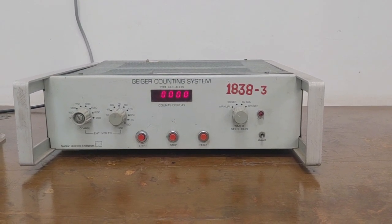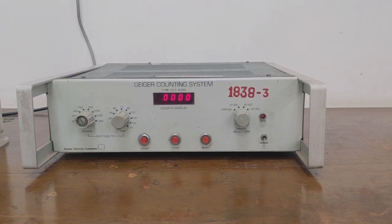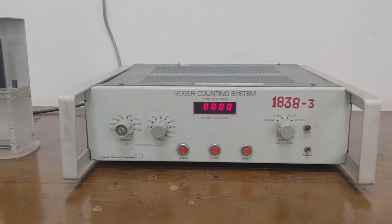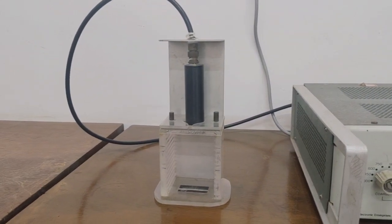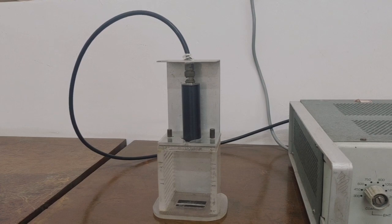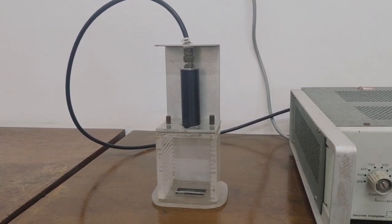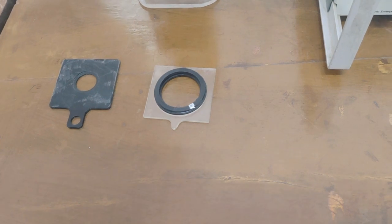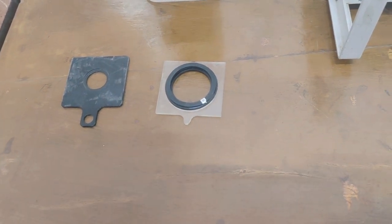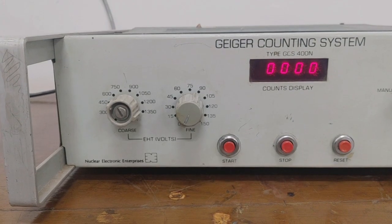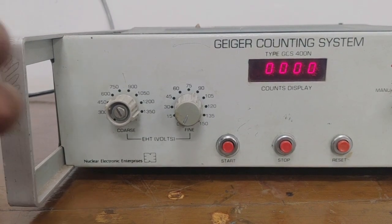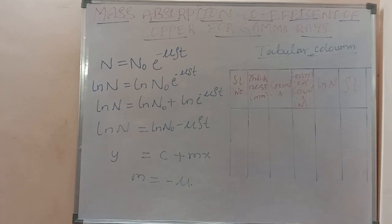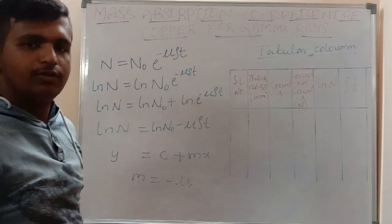Hello everyone, welcome to this video on a nuclear physics experiment. In this experiment, we are studying the mass absorption coefficient of copper for gamma rays. The aim is to determine the absorption coefficient of gamma rays using the GM counter. The apparatus required includes the GM counter, copper sheets of the same thickness, and a gamma ray source.